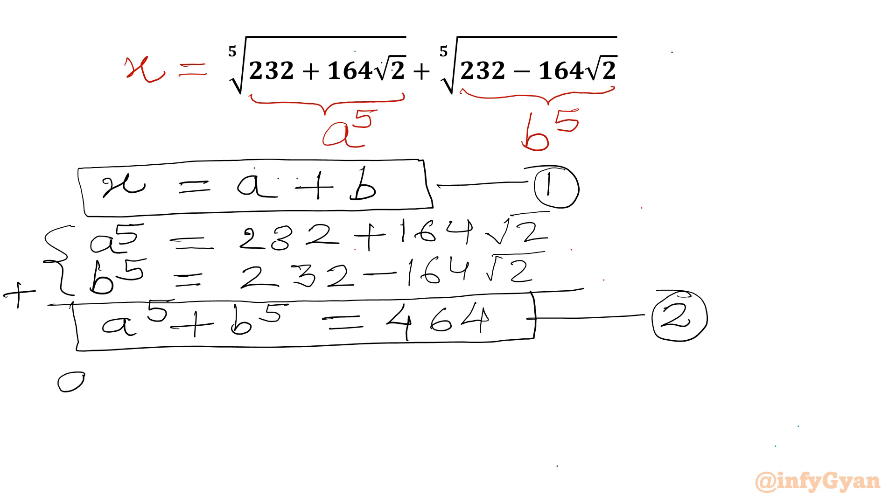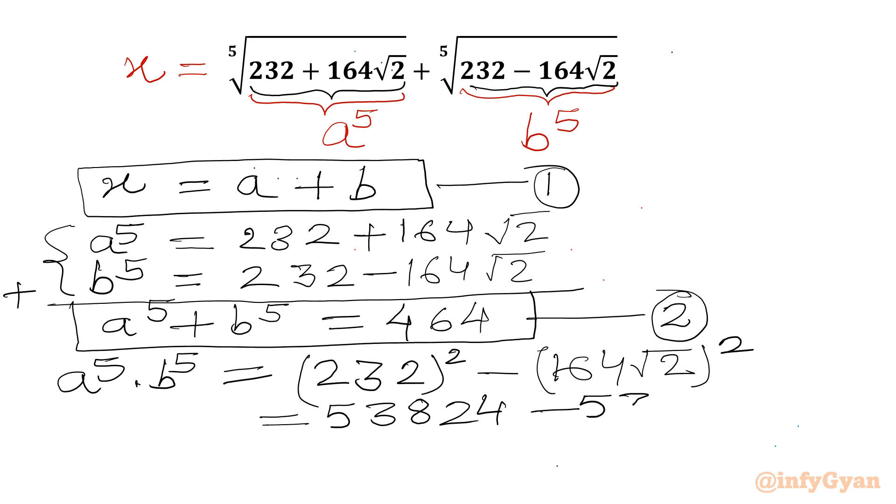Now I will consider product of both. A power 5 times b power 5 will be equal to the product of these two radicands. So a plus b times a minus b. We can use difference of two squares formula. So 232 whole square minus 164 square root 2 whole square. Now square of 232 is 53,824 minus square of 164 square root 2. This value will be 53,792. So I can write difference will be 32.